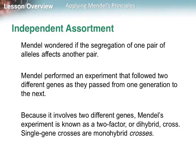What Mendel wondered was if the segregation of one pair of alleles affected another pair — in other words, were certain traits passed together? Mendel performed an experiment that followed two different genes as they passed from one generation to the next, crossing more than one trait at a time and watching what happens. Because it involves two different genes, Mendel's experiment is known as a two-factor or dihybrid cross. Single gene crosses were called monohybrid crosses.